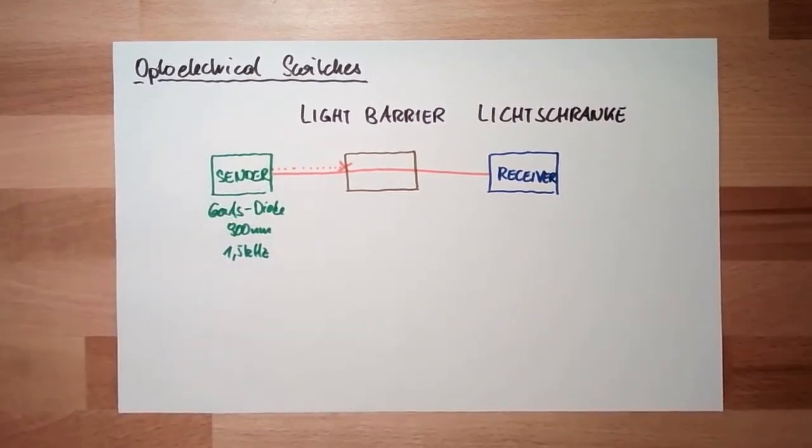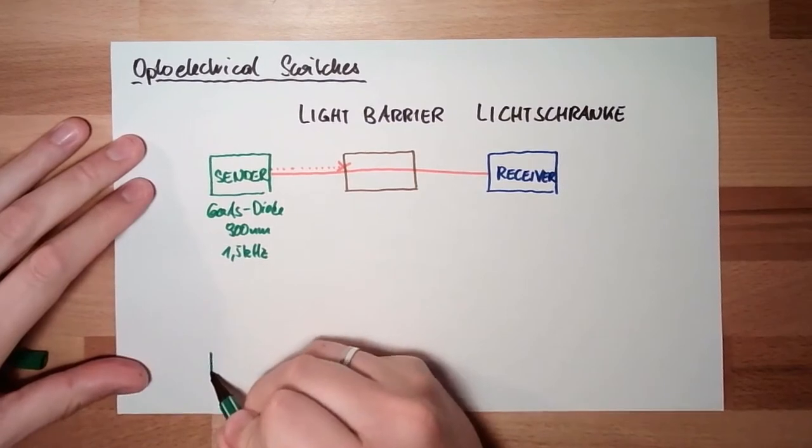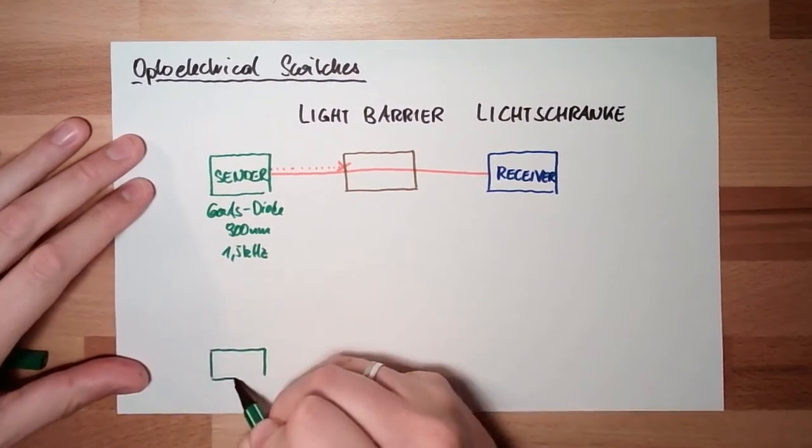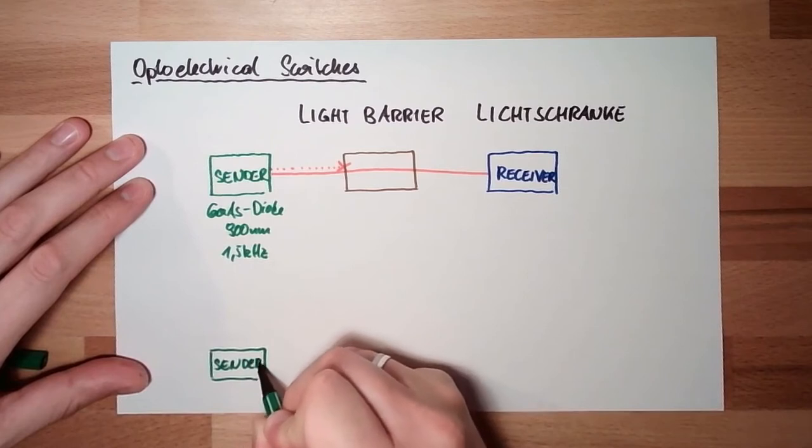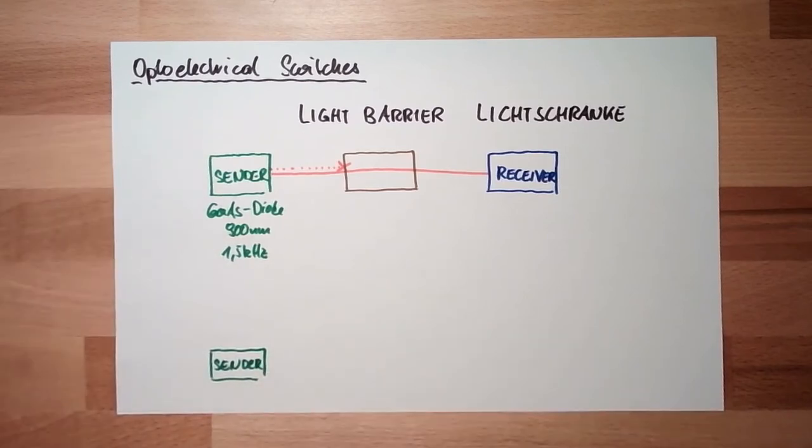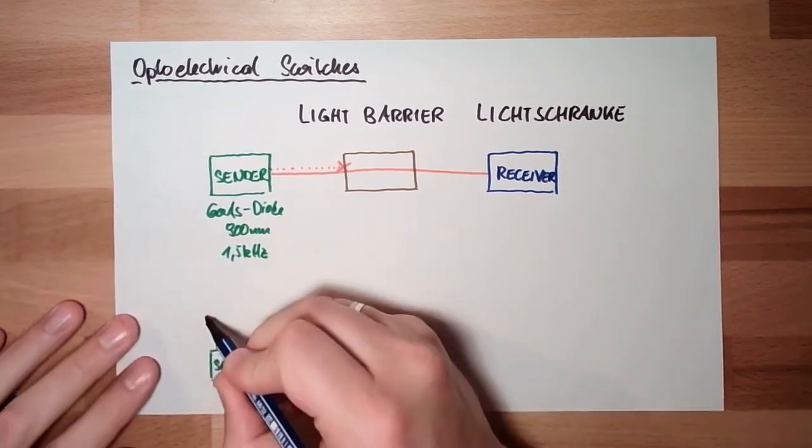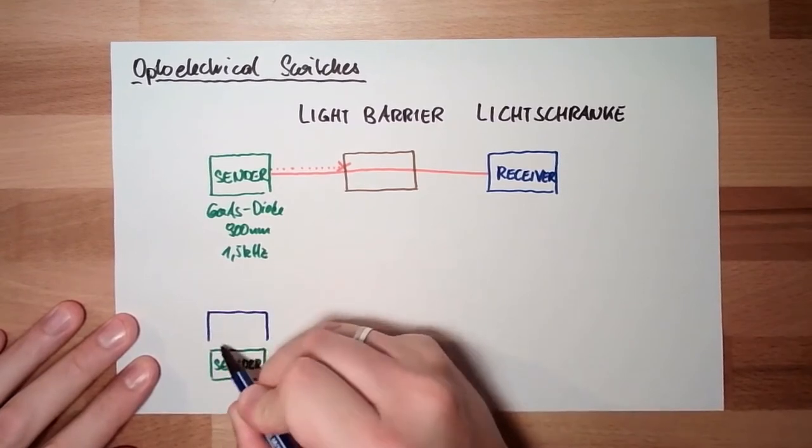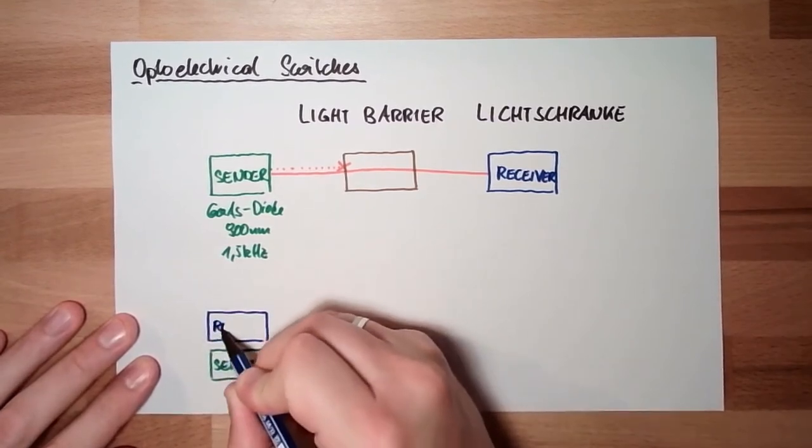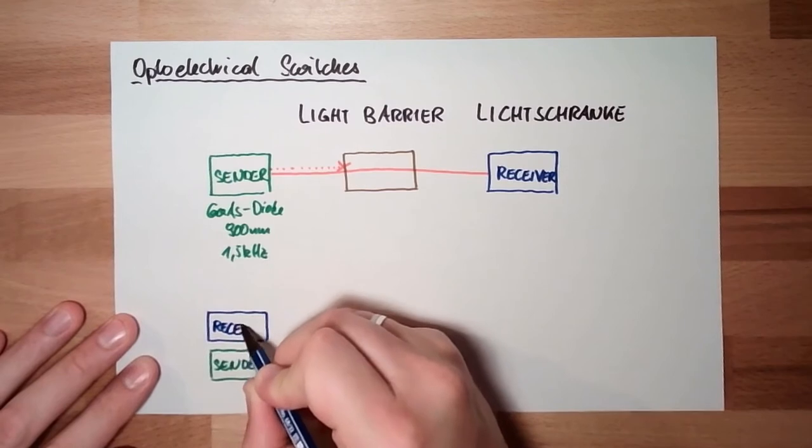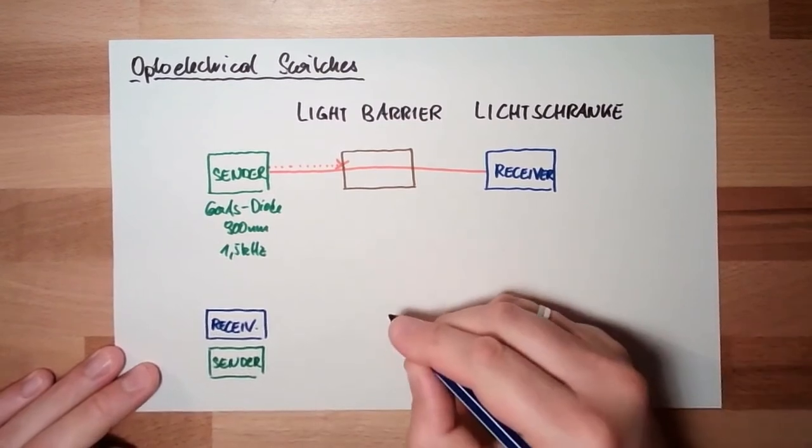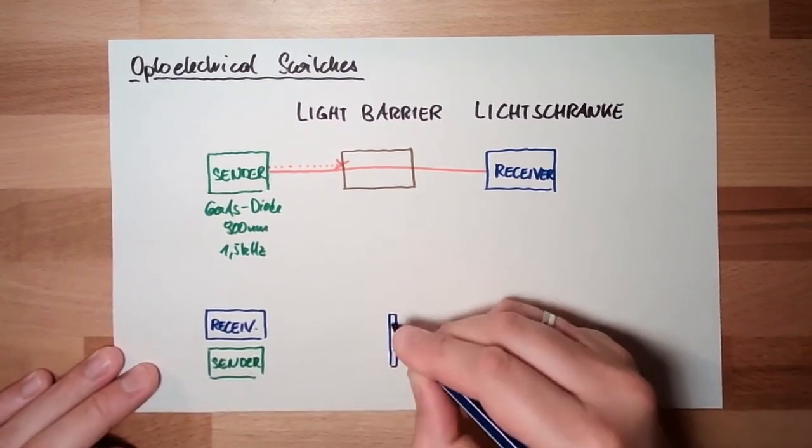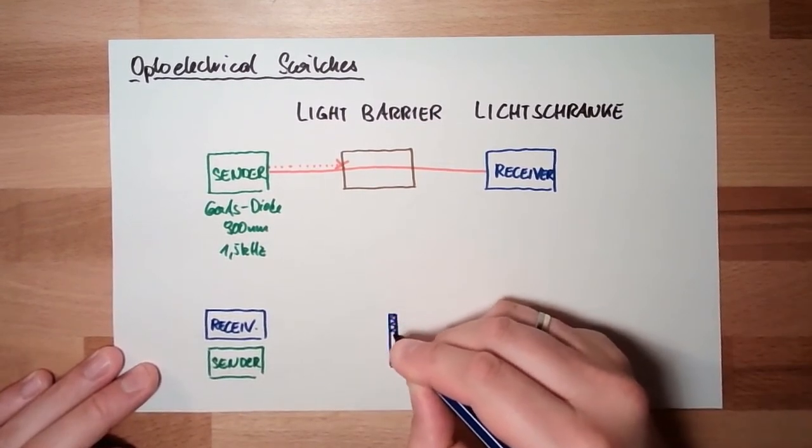There is also a configuration where the sender and the receiver are at one side. And on the other side, we do have a reflector here somewhere.